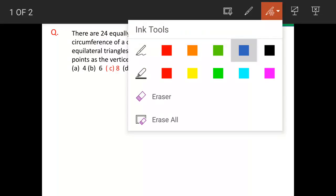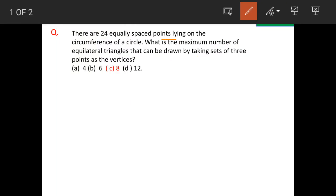There are 24 equally spaced points on the circumference of a circle. What is the maximum number of equilateral triangles that can be drawn using these sets of 3 points as vertices? The answer is option C, 8.